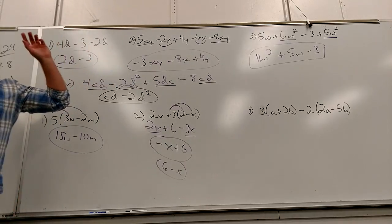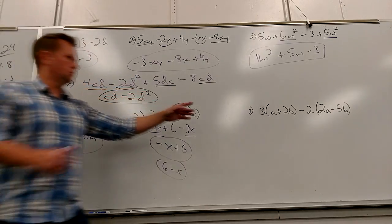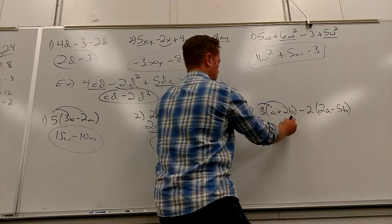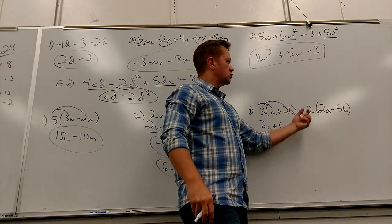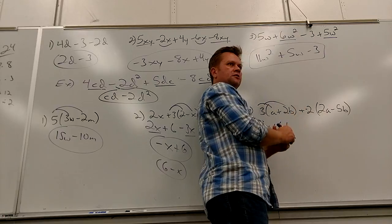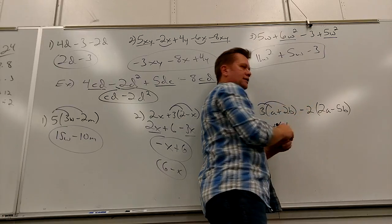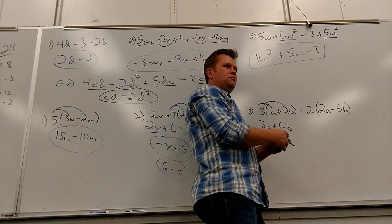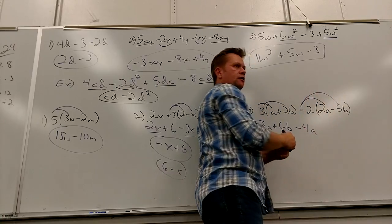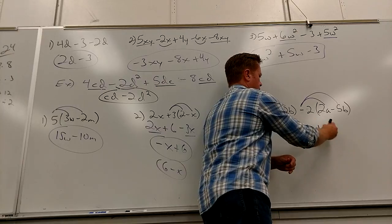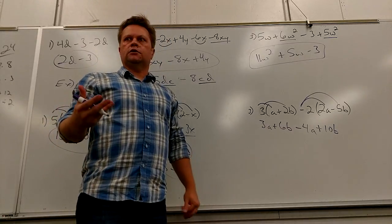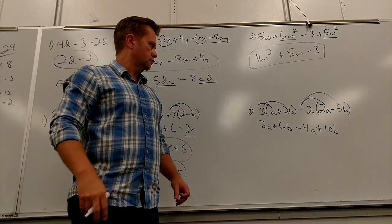Now, the last guy's got one of the most common mistakes that you can make. So the first piece normally people are cool with. 3A plus 6B. This is the part that trips people up. What are you distributing? A negative 2. Negative 2. If you don't believe me, you could rewrite this as plus and negative, right? The subtraction operation is a negative. So negative 2 times 2A. Minus 4A. Negative 2 times negative 5B. Positive. 10B. Because negative times negative is positive.